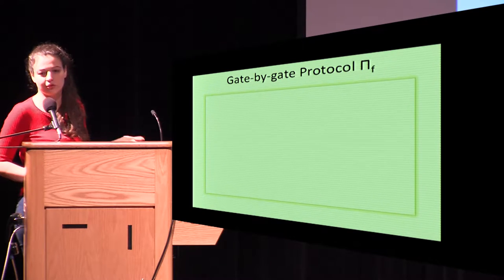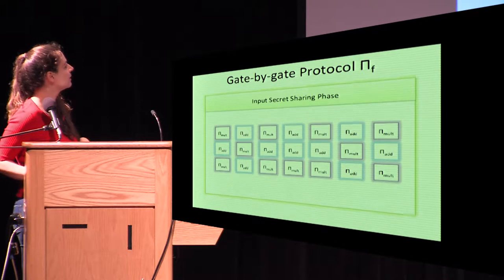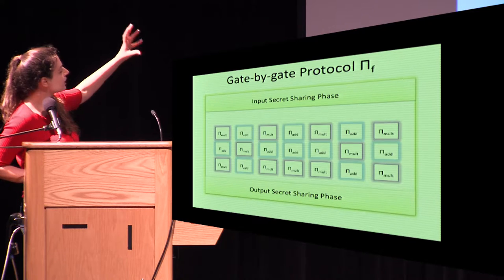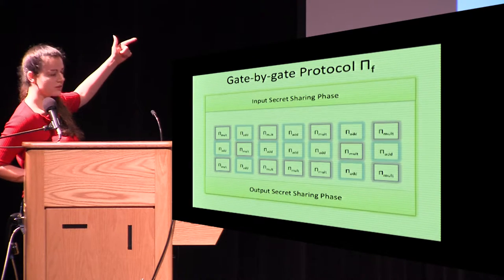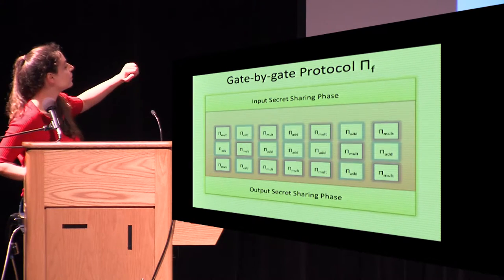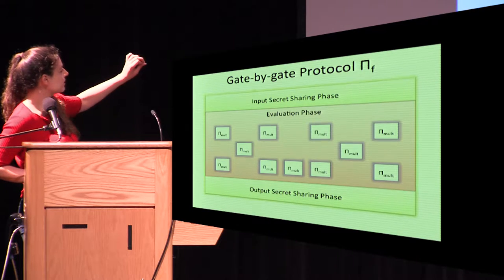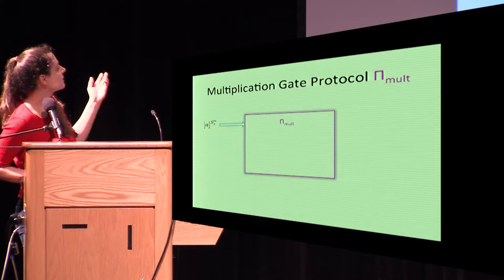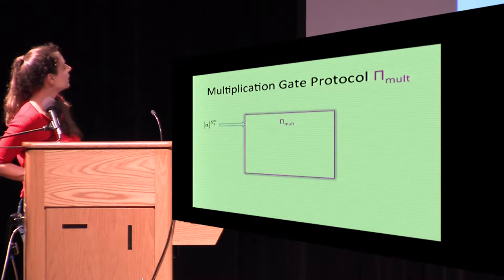Let's see how gate-by-gate protocols work. We have multiplication and addition gates. At the beginning we secret-share the inputs, and at the end we have an output secret sharing. The invariant is that every time we compute each gate, we have a multiplication gate protocol. Because we work on secret shares, additions are free — we don't need to communicate for additions, but we do have to communicate for multiplications. The multiplication gate protocol receives secret-shared inputs A and B, based on secret sharing S with n players and privacy threshold T.